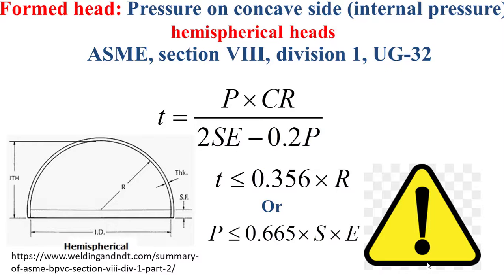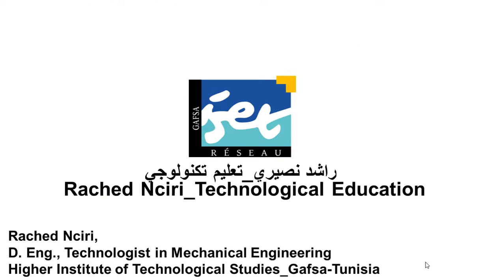Pay attention: this formula is valid only when the obtained thickness does not exceed 0.356 times the internal crown radius of the sphere, or when P does not exceed 0.665 multiplied by the maximum allowable stress multiplied by the joint efficiency. This concludes the educational video. Please mention any remarks or suggestions in the comments. Thanks a lot.